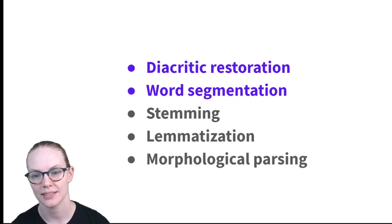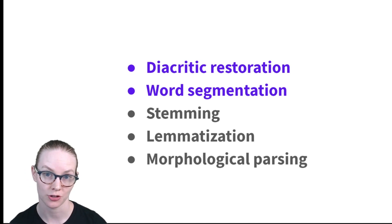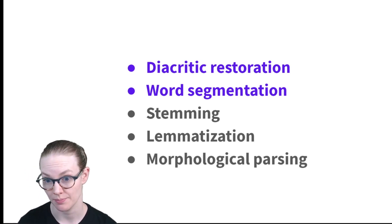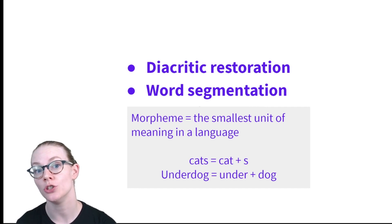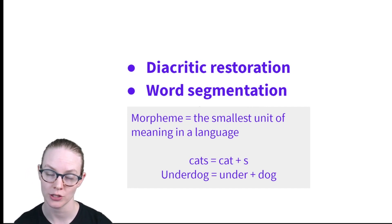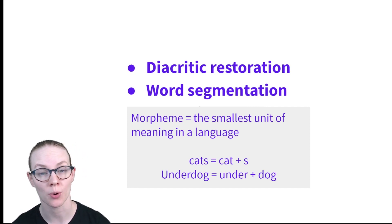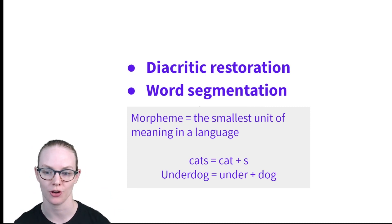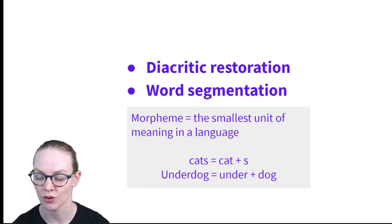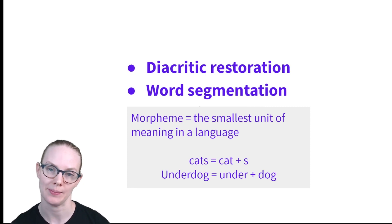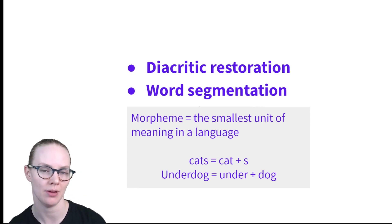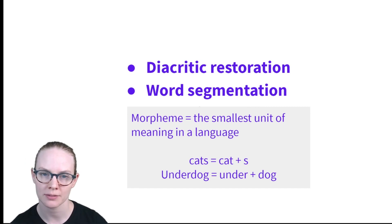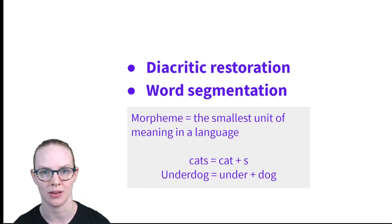The next three tasks on our list — stemming, lemmatization, and morphological parsing — all have to do with morphemes. A morpheme is the smallest unit of meaning in a language. A word may have one morpheme, like 'language,' which you can't really break down any further. Or it may have multiple morphemes. For example, 'cats' is made up of the morpheme 'cat' and the morpheme '-s' that means multiple or plural. And 'underdog' is made up of the morpheme 'under' and the morpheme 'dog.'